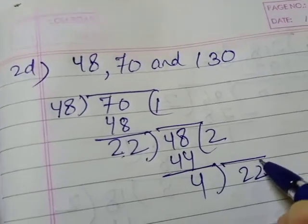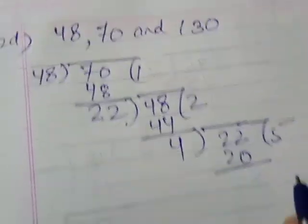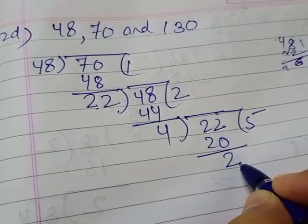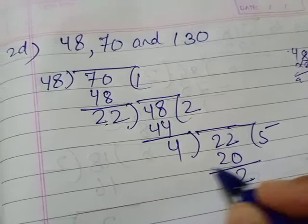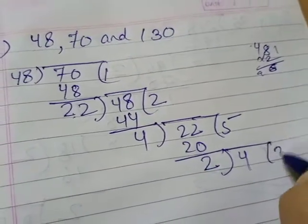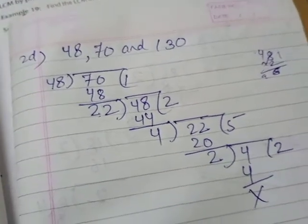Four fives are 20, then here two will remain, right? Four fives are 20 and again two will remain. So this previous divisor will be your dividend: two twos are four. Here we have completed our first long division HCF.